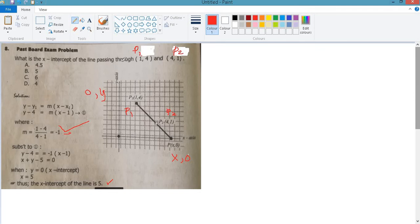We have m is equal to negative 1, then b is positive 5. For the equation of the line, y is equal to mx plus b. We have now y is equal to negative x, then the y-intercept is 5.